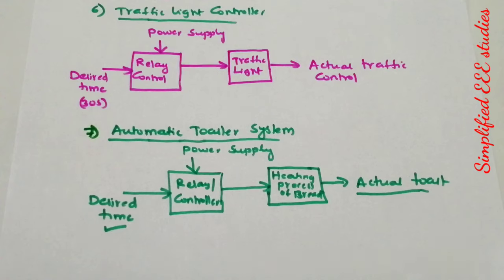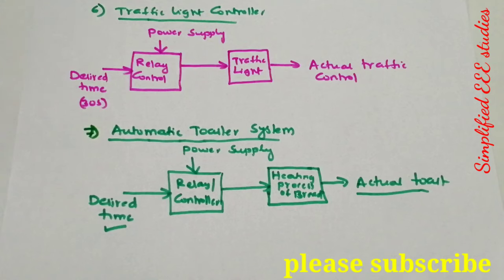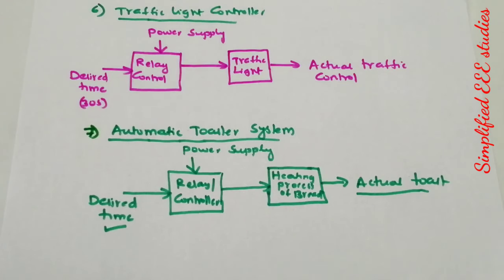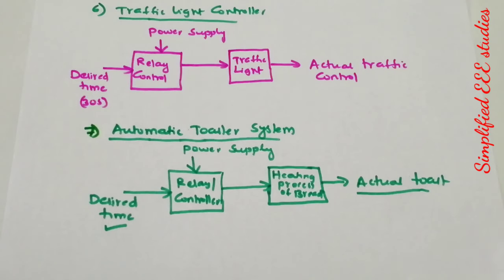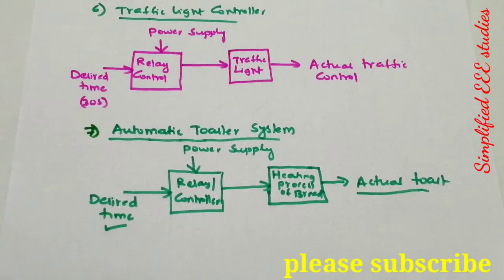There are many different examples of open loop control systems in day-to-day life, apart from engineering applications. This concludes the discussion on open loop control systems and their examples.